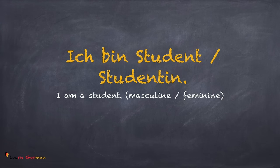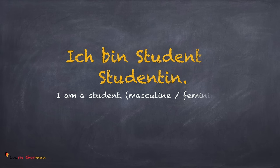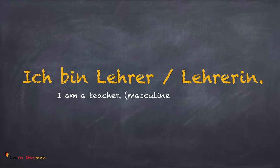Now let's talk about what you do. Ich bin Student. Or if you are a female, you would say Ich bin Studentin. German has gender-specific nouns like many other languages. Student is the masculine form and Studentin is the feminine form. Similarly, if you are talking about your profession, you would say Ich bin Lehrer, which is the masculine form, or Ich bin Lehrerin, which is the feminine form.